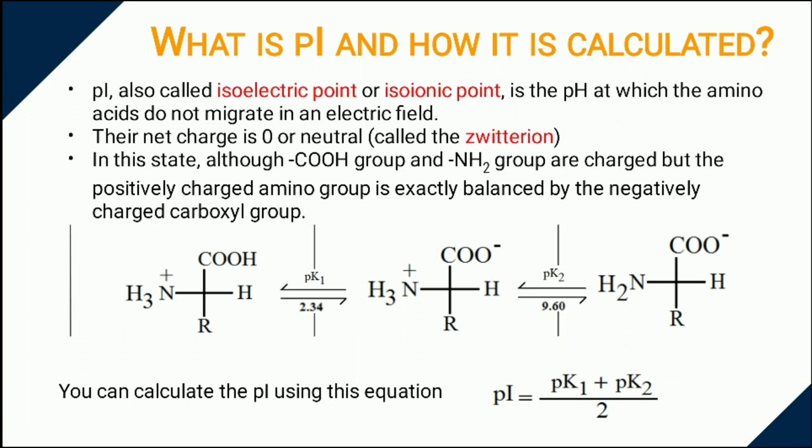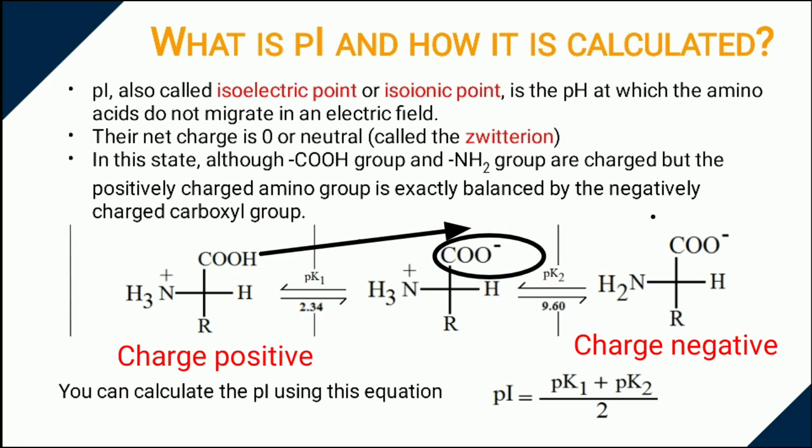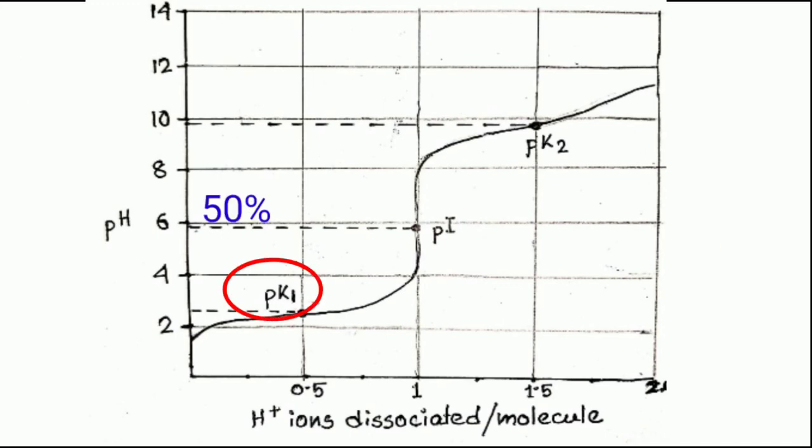Carboxyl group and alpha amino group are charged. Ionization of amino acid is pH dependent. At acidic pH, alpha carboxyl group dissociate its proton and amino acid becomes positively charged. When 50% amino acids present in the solution dissociate protons, it's called pK1.